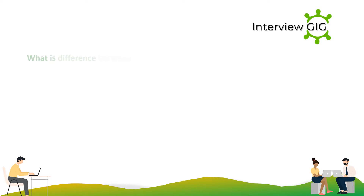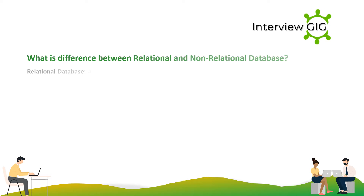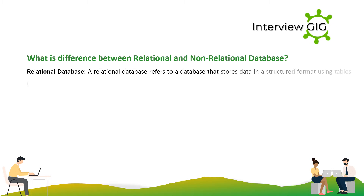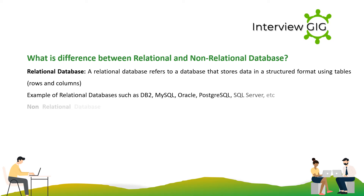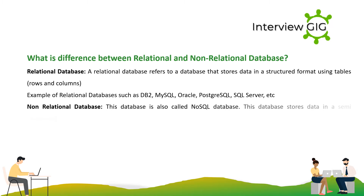A relational database refers to a database that stores data in a structured format using tables, rows, and columns. Examples of relational databases include DB2, MySQL, Oracle, PostgreSQL, SQL Server, etc.